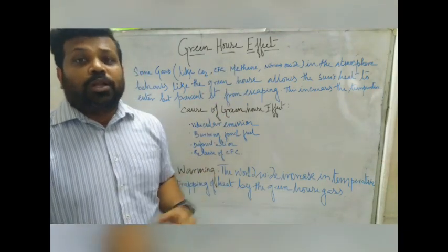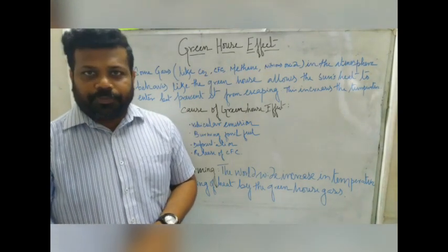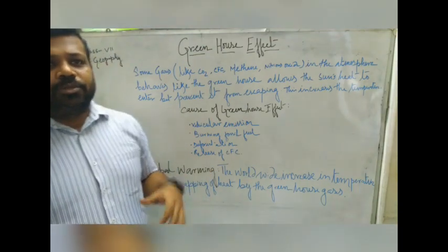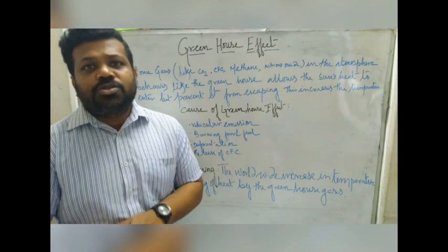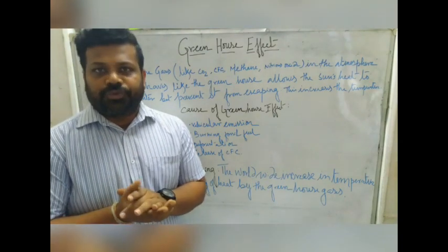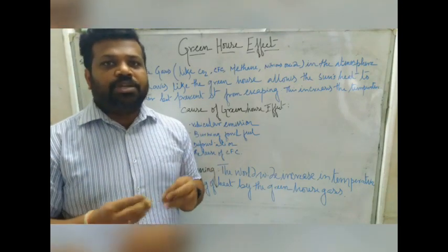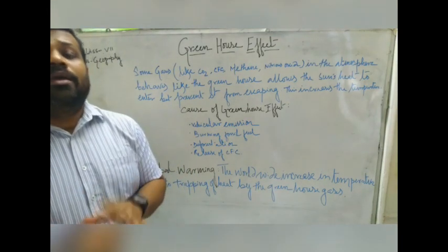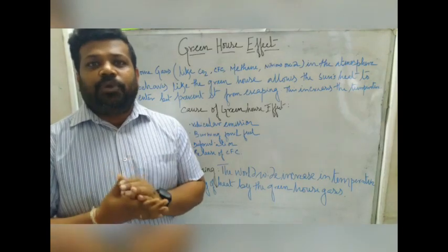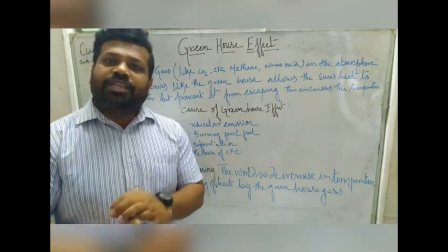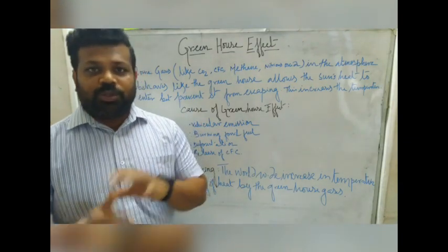The Greenhouse Effect is one of the environmental problems nowadays. This Greenhouse Effect is also called global warming. Before starting the chapter, you must know what is a Greenhouse. A Greenhouse is a glass house. It is mainly seen in colder areas where heat can enter, but the heat cannot escape from this glass house. As a result, the temperature inside the glass house increases.